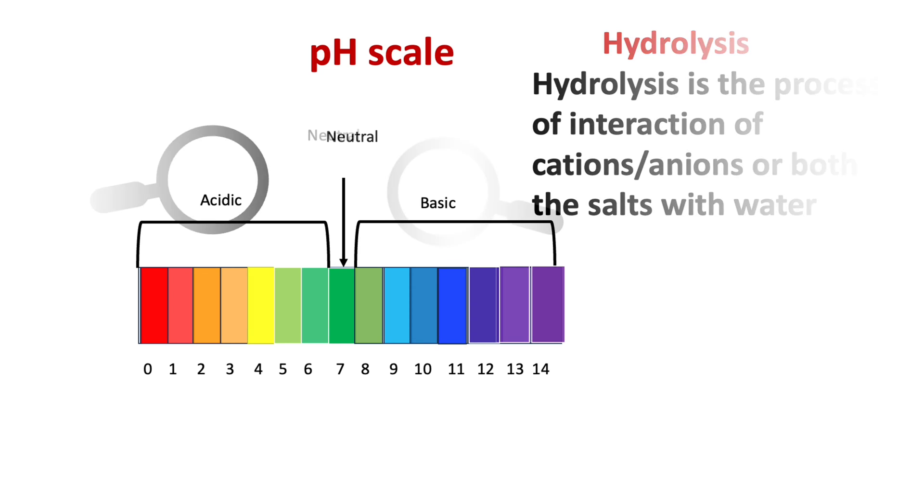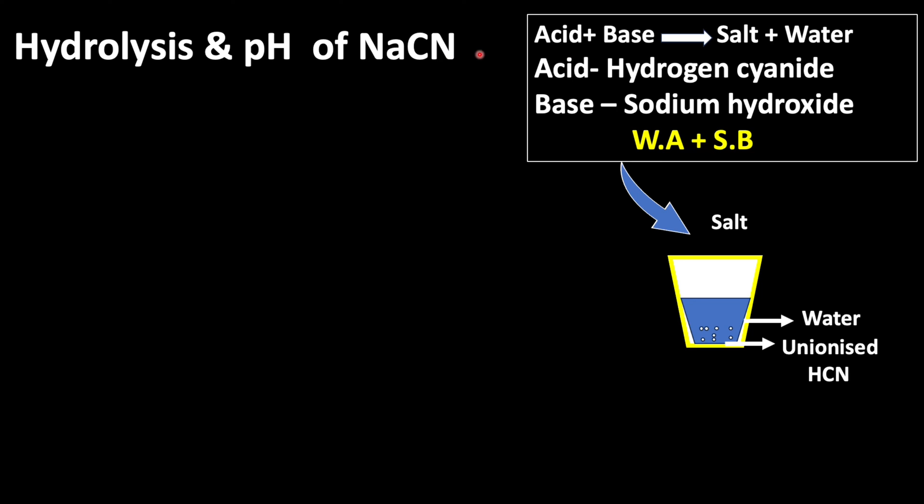Whenever acid reacts with base it forms salt. Sodium cyanide is a salt which is formed from hydrogen cyanide, a weak acid, and sodium hydroxide, a strong base.